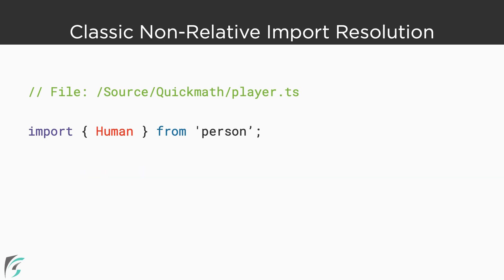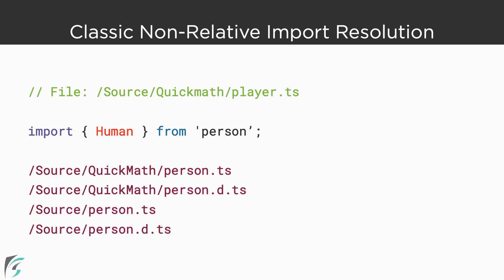For non-relative imports in classic mode, this is a little more advanced. If we import the person module without any path reference, the compiler will begin its search for the person module using the same two files — a .ts or a .d.ts extension. If it doesn't find the file, it will go one level up in the directory structure and search for the same two files. It will continue moving up the directory structure until it either finds one of the files or runs out of directories.